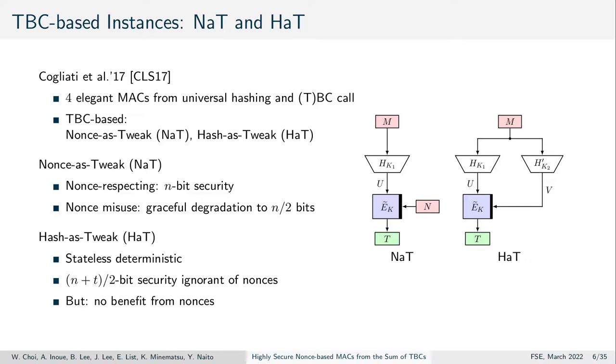NAT simply used the message hash as an input to the block cipher call and the nonce as a tweak. Therefore, it achieved optimal security if no nonces repeated. However, its security degenerated to n/2 bits when nonces repeat up to 2^(n/2) times.